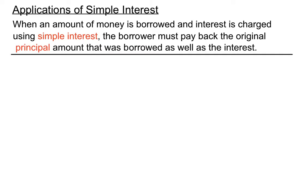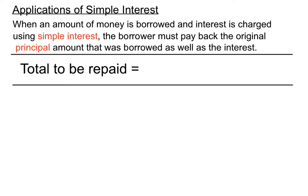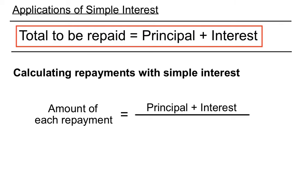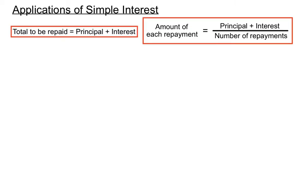When money is borrowed under simple interest, the borrower must pay back the original principal amount as well as the interest. We can't just pay the interest — we've got to pay the original amount borrowed plus any interest charged. So the total to be repaid equals the principal plus the interest. And the amount of each repayment equals the principal plus interest divided by the number of repayments. Let's have a look at a key example.